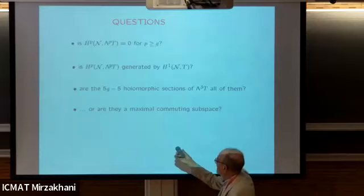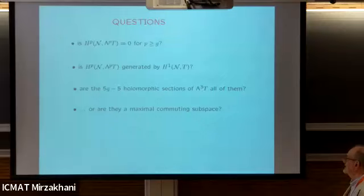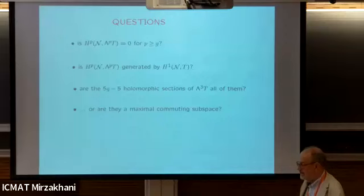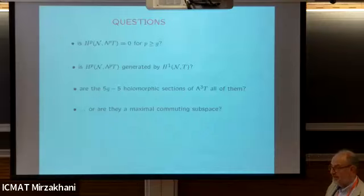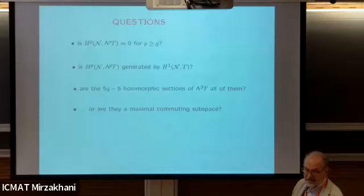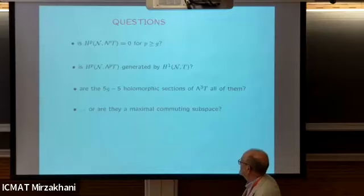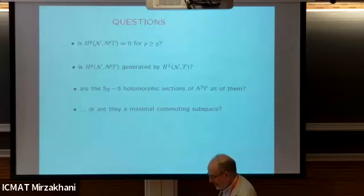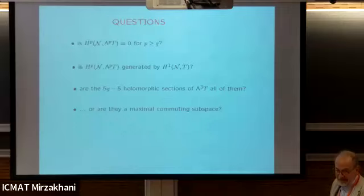What about these 5g minus 5 holomorphic sections? Is this all of them? I suspect not. The example I gave was a singular space - low genus and singular, not the smooth space. In general, I would expect there are probably more holomorphic sections than the ones occurring in this way. But the ones that occur in the way I've given are commuting. So maybe it's all the maximal commuting subspace.